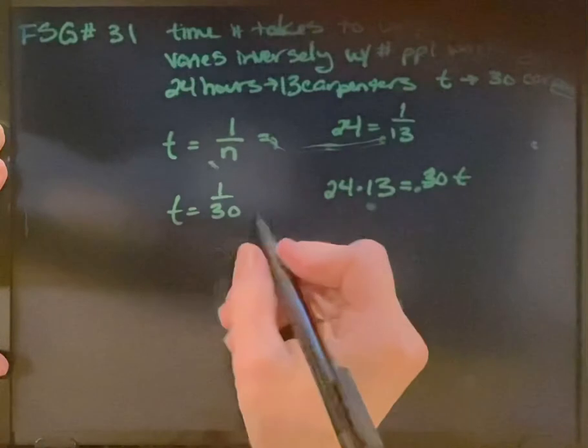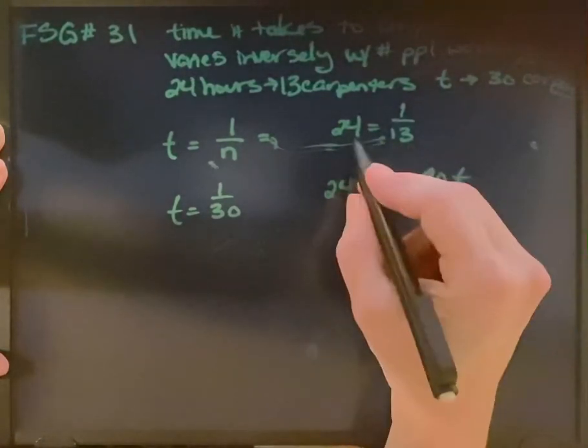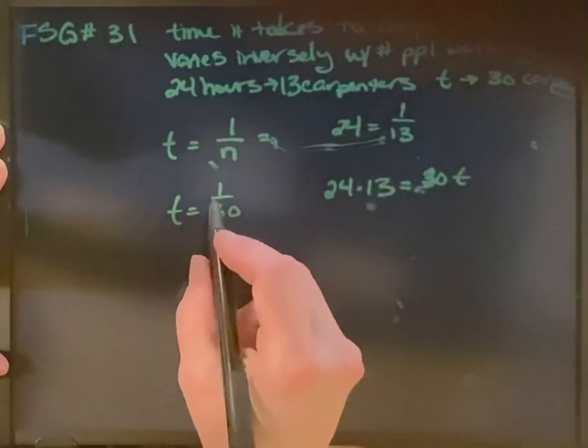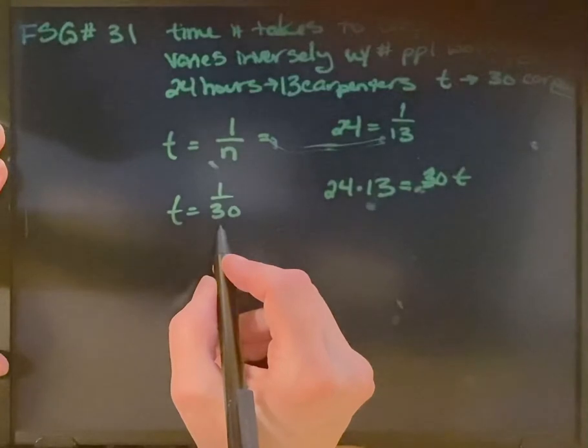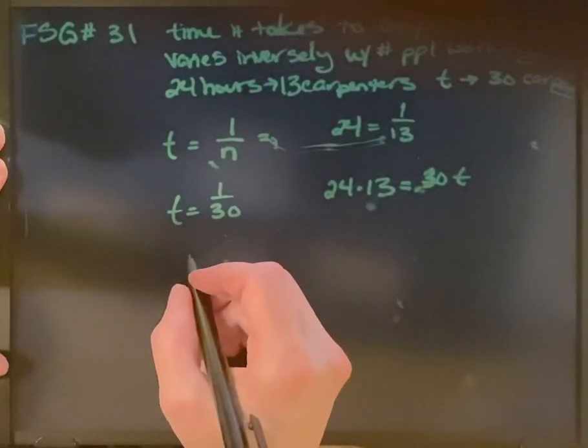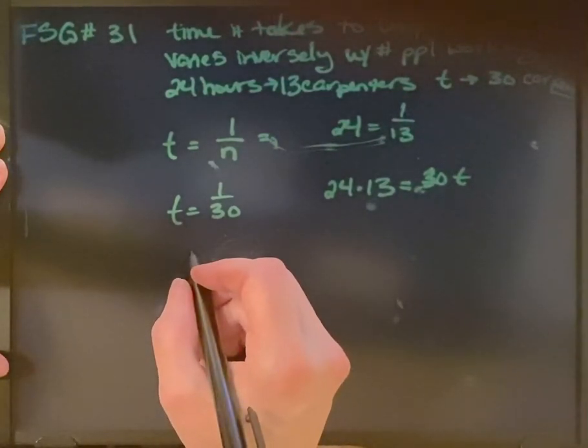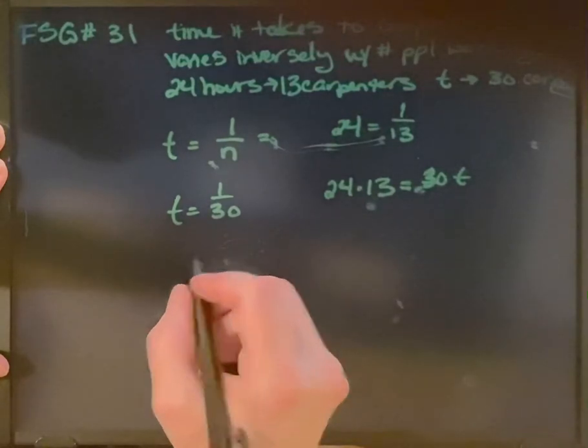Sorry, I think I missed a step here. Let me go back. 24 and 1 over 13 and t or 1 over 30. So we've got, yeah, no, that was right.